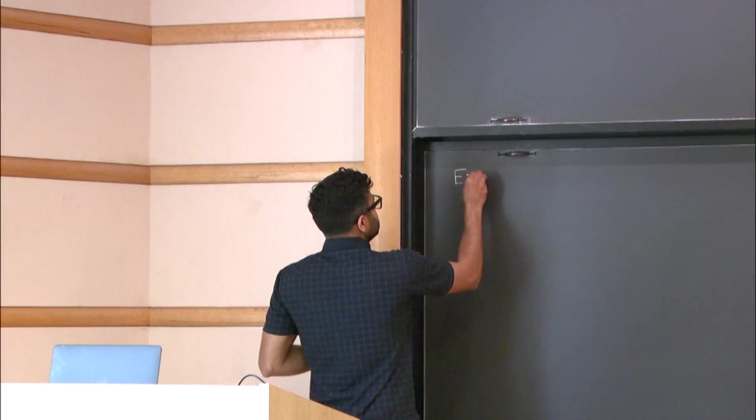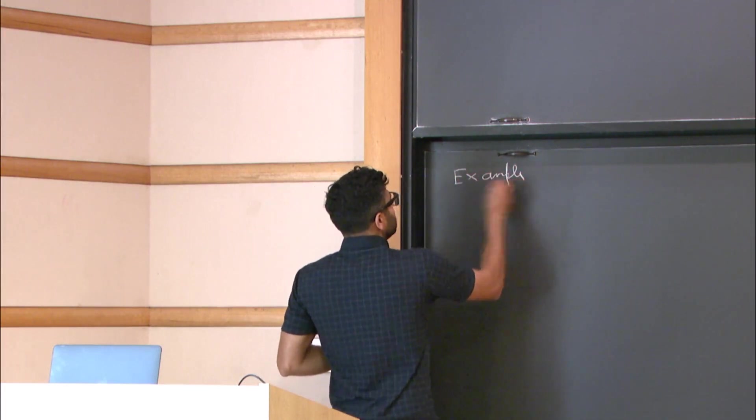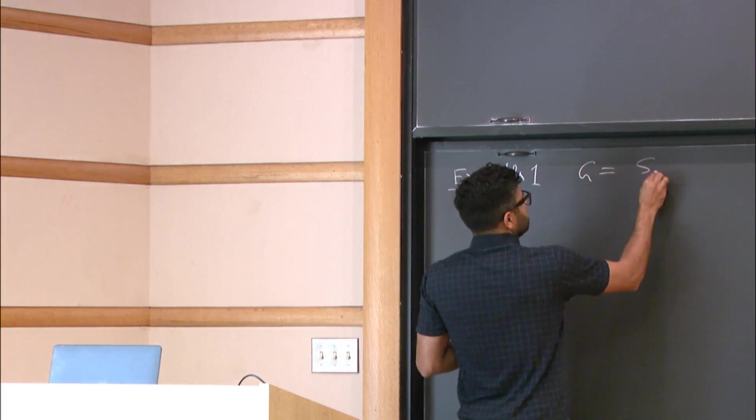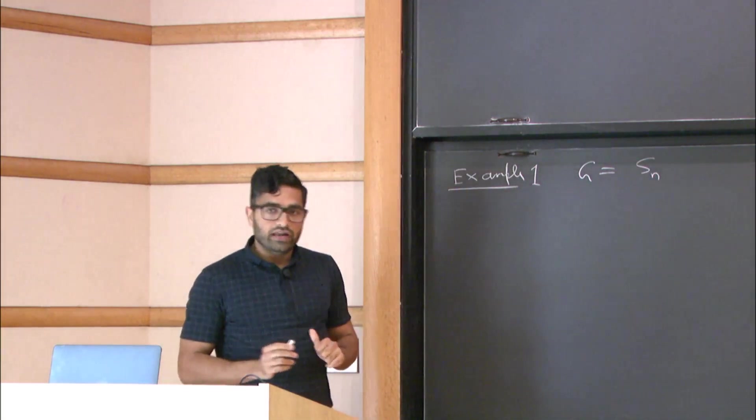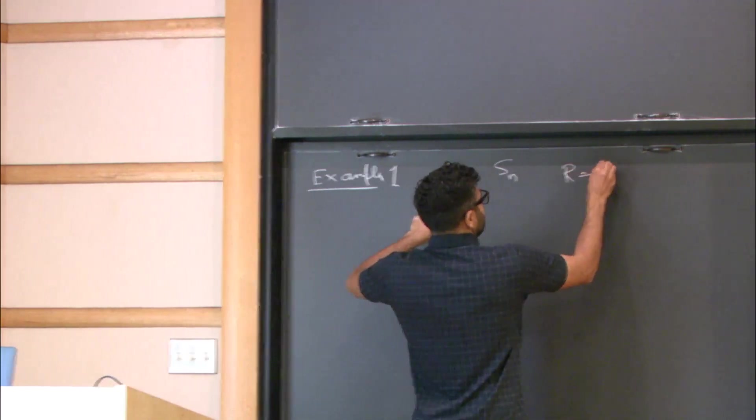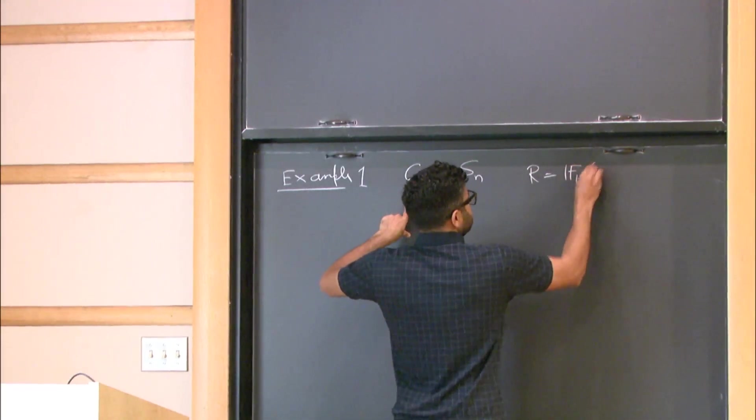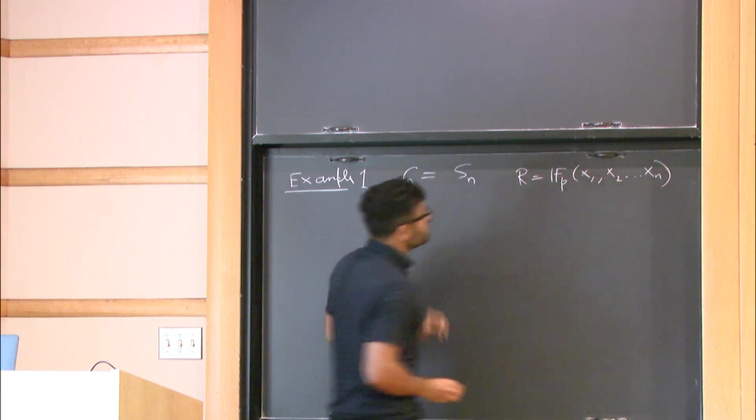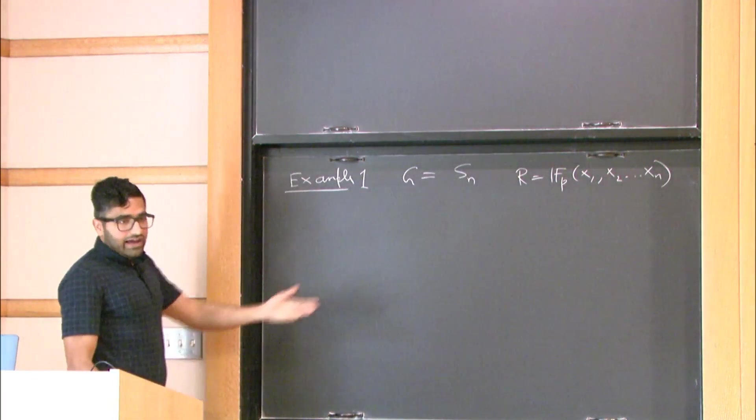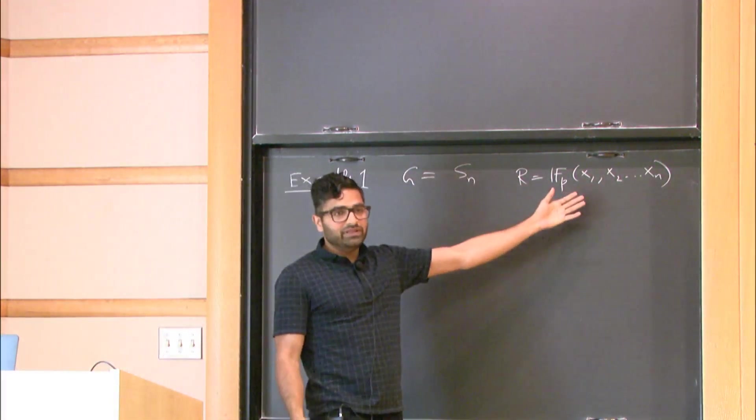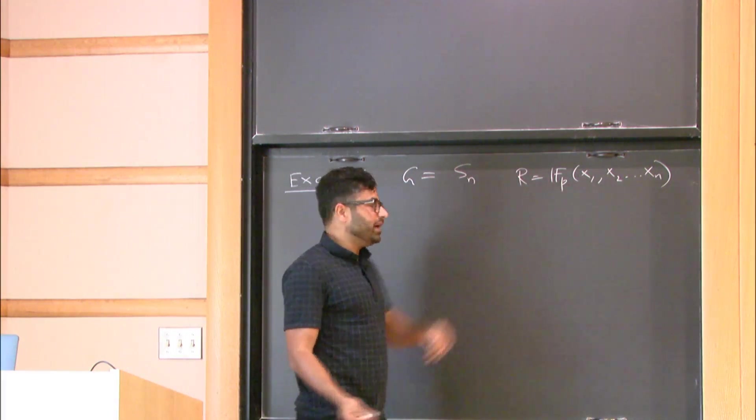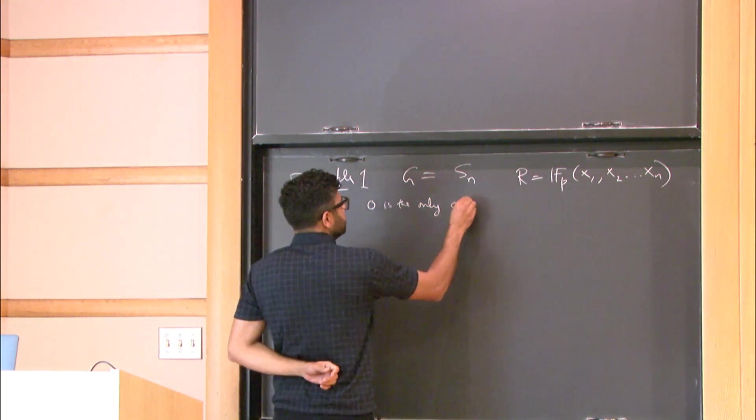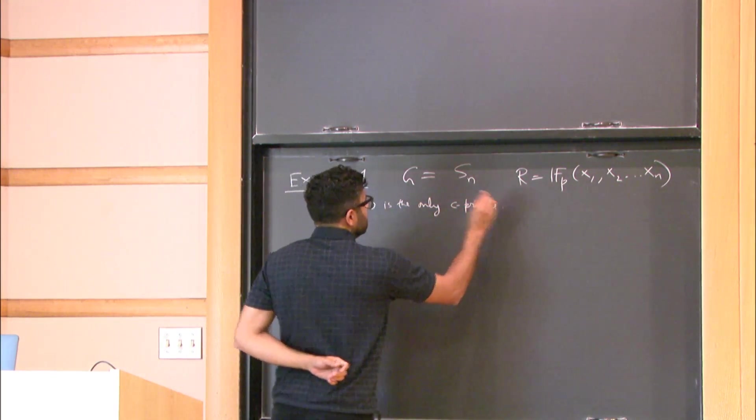So now let me try to tell you why this is a good notion. Why do we care about such C primes? So I will give you some examples. So my first example, my group is going to be the symmetric group on N letters. And my ring is going to be just the rational field in N variables. Now, I have a field, so there is only one prime, and that is easy to check. It's in C prime, so 0 is the only C prime.